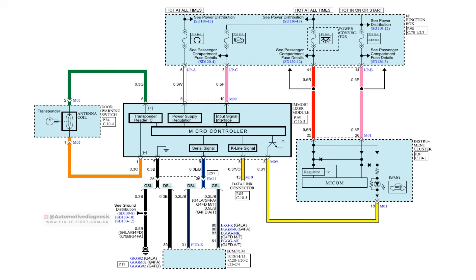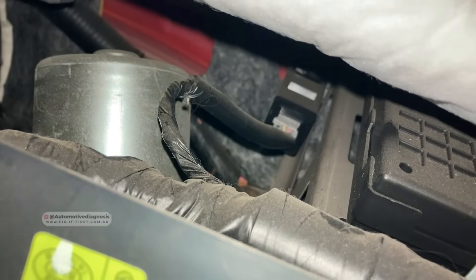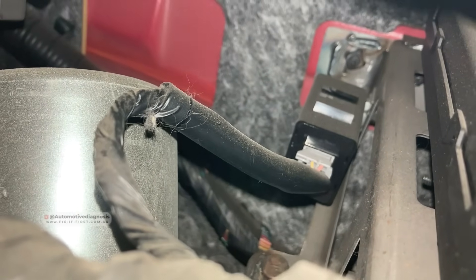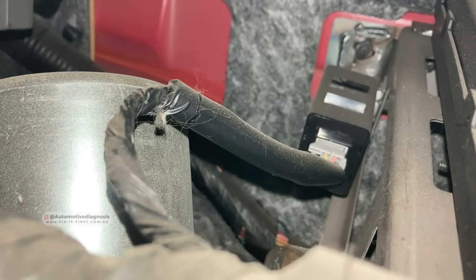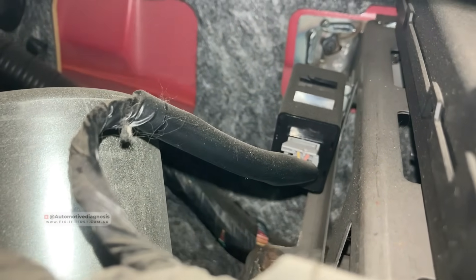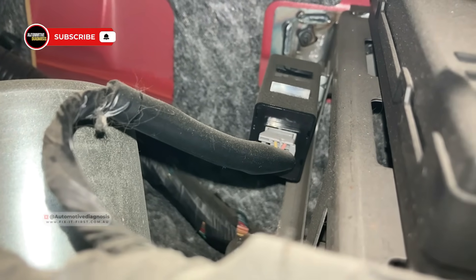Very quickly: K-line is a one-wire communication network generally used for communication between a scan tool and some control units — like the immobilizer control unit. Sometimes K-line is also used for communication between the immobilizer control unit and ECM, which is exactly this case. On the car, I have removed the instrument cluster to reach the immobilizer control unit, which is right at the back. This car is a Kia, but the diagnostic procedure is very similar on many cars. I'm going to disconnect the connector to find the K-line wire because it's much easier to hook up the oscilloscope from here.